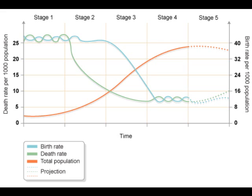Population growth is passed through the different stages as shown in the five stages of the Demographic Transition Model, or DTM. Stage one is High Stationary: the birth rate is high, the death rate is high, and the natural increase is stable or there is a slow increase. The reasons for the high birth rate include high infant mortality due to poor sanitation.